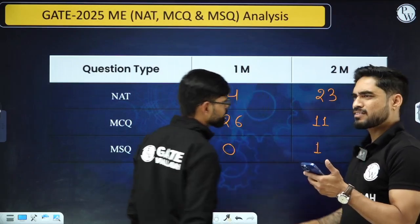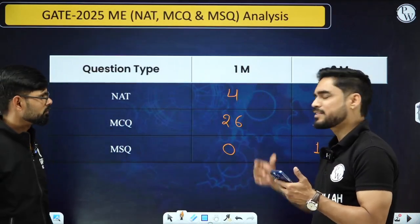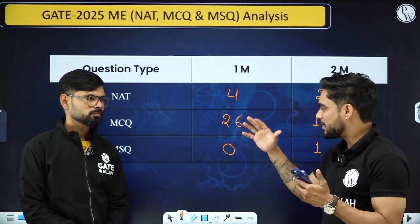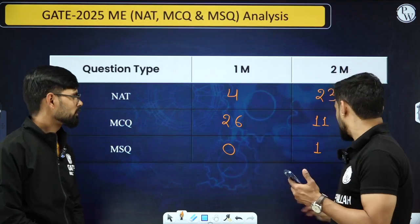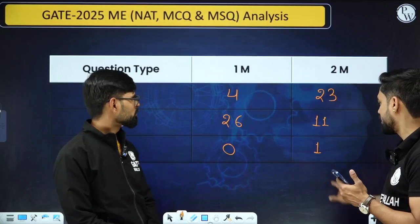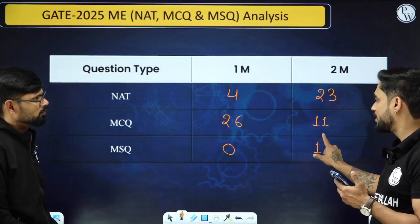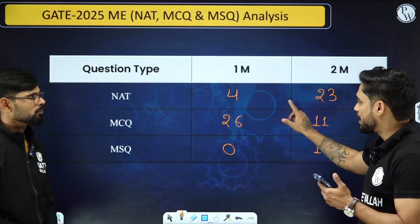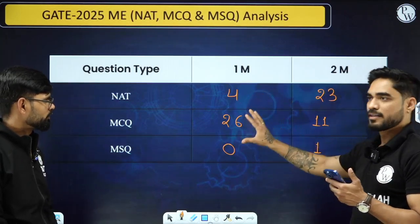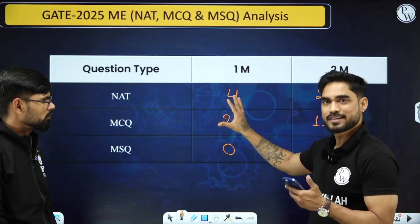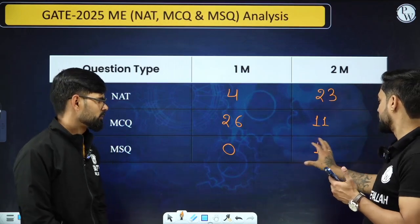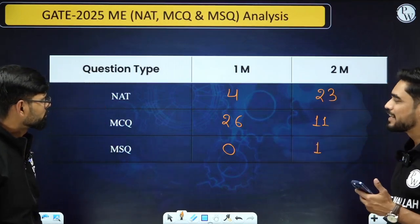A lot of students get scared from MSQ questions, but let me tell you, for the past three years we have seen that they are decreasing the weightage of MSQ questions. If you compare with last year, there were two MSQ questions, and this year there was only one. Also, one-mark NAT questions went from zero last year to four this year, so the NAT and MCQ weightage has changed, but MSQ weightage is barely changed.